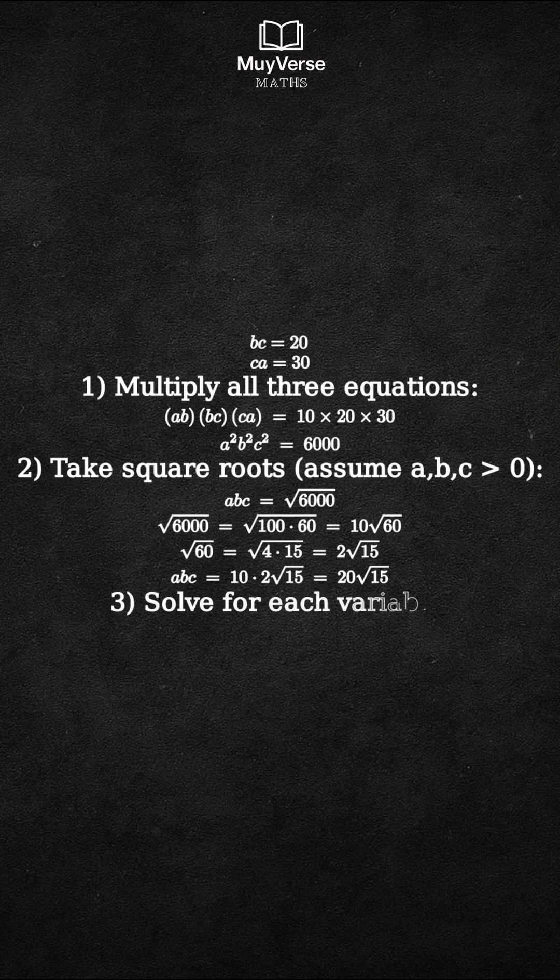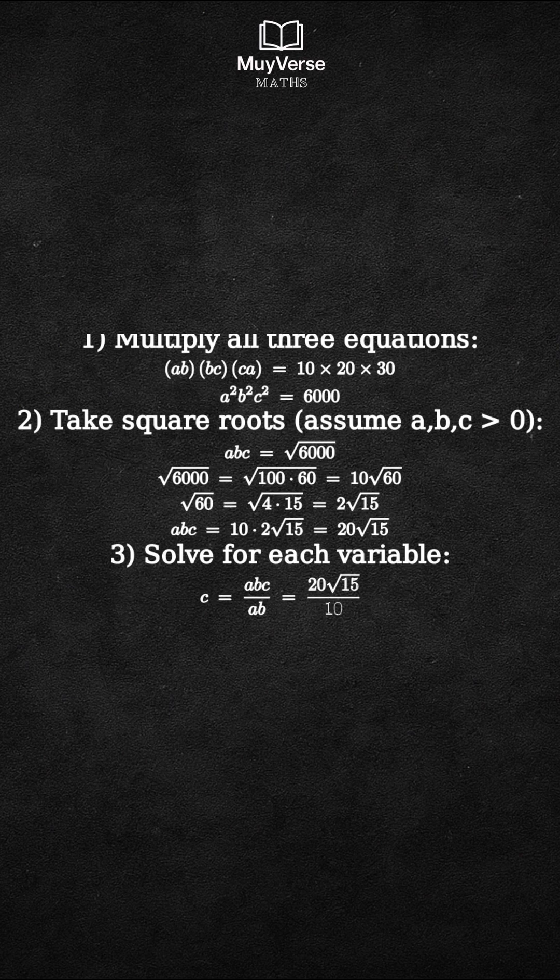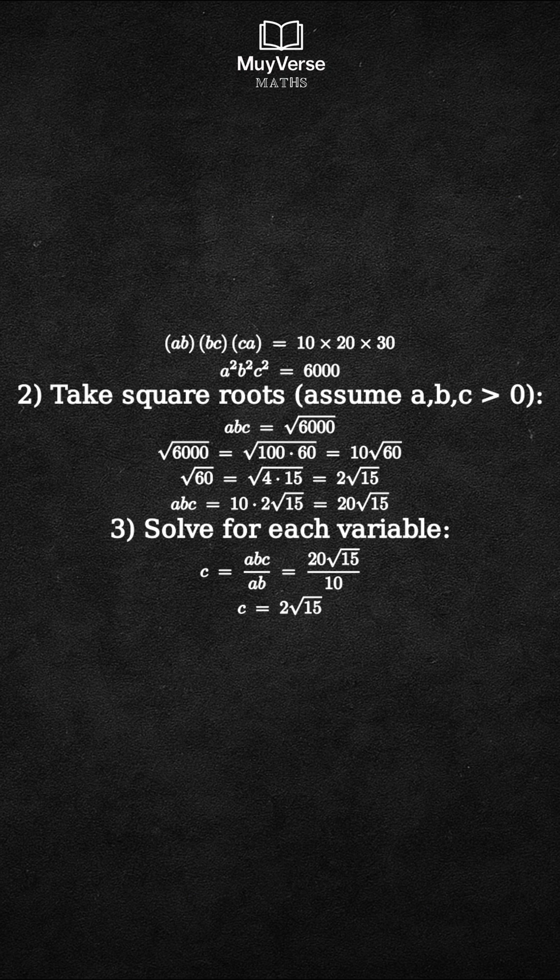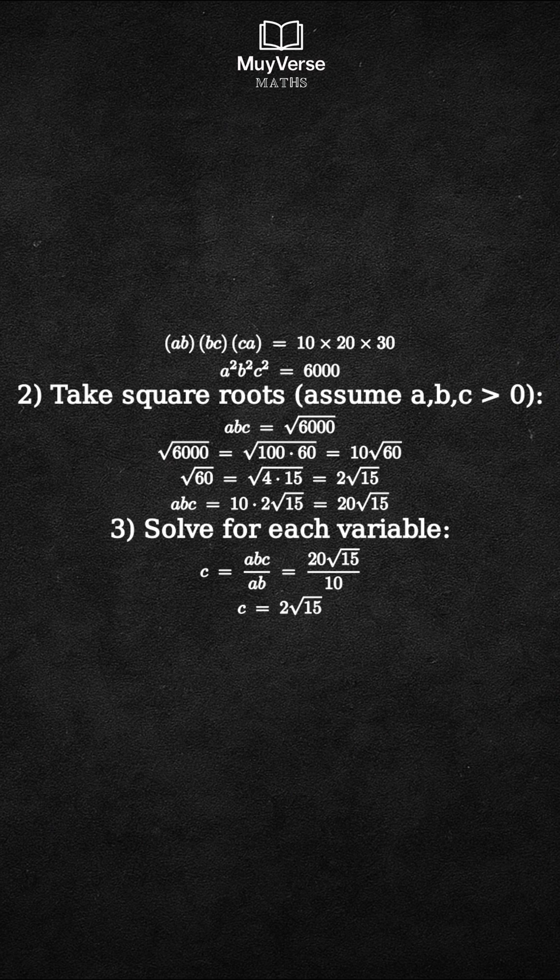Step 3. Express a, b, and c in terms of abc and the given pairwise products. From ab equals 10, we get c equals abc divided by ab, which is 20 square root 15 divided by 10, which simplifies to 2 square root 15.